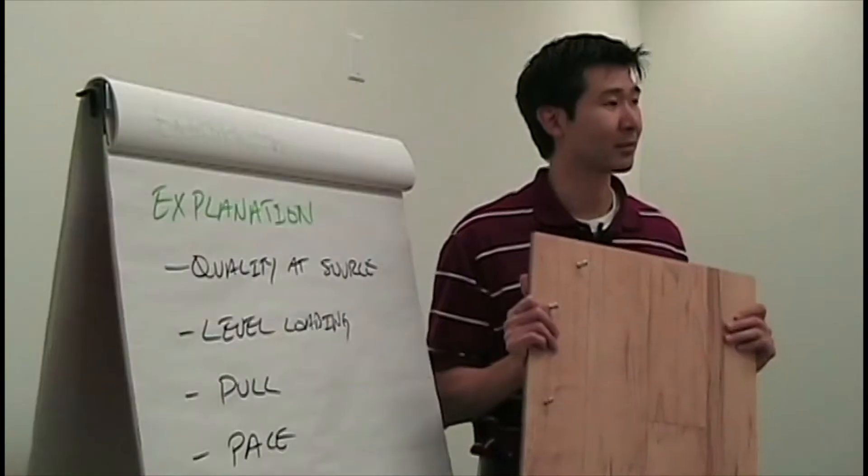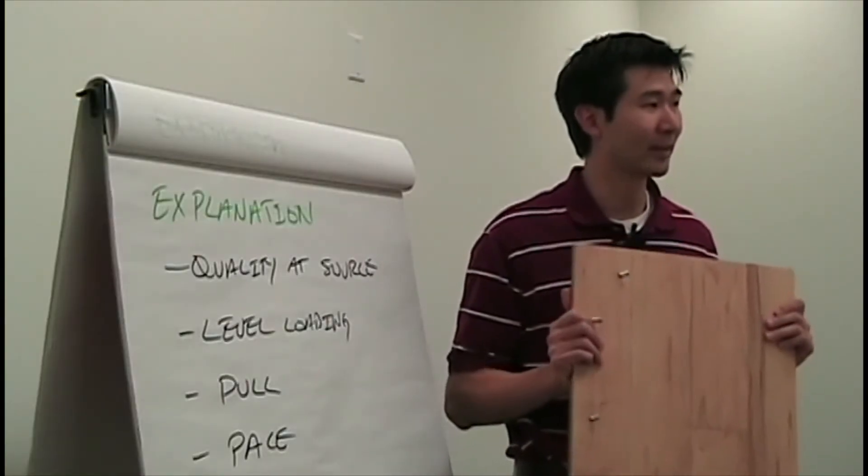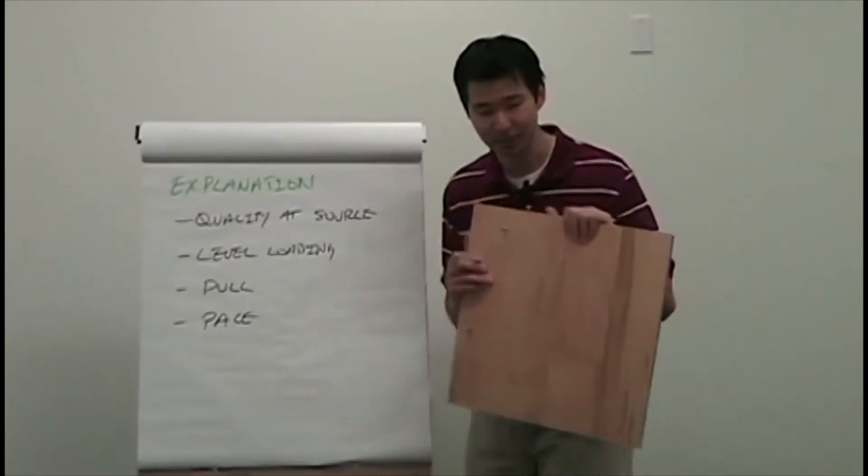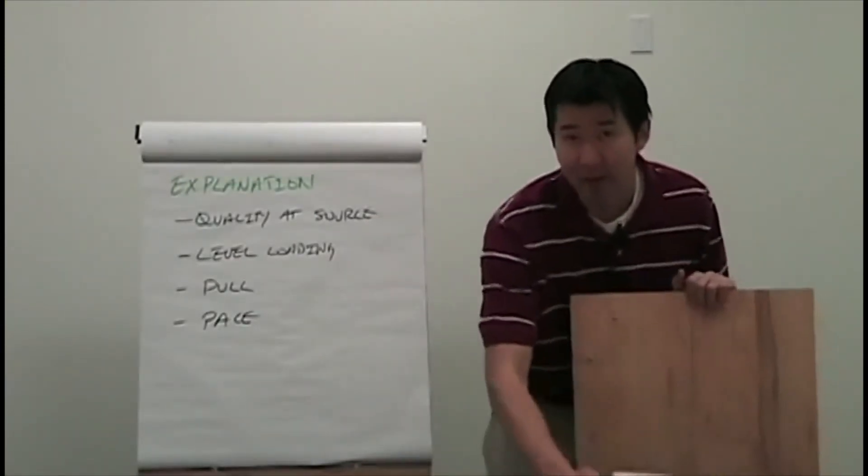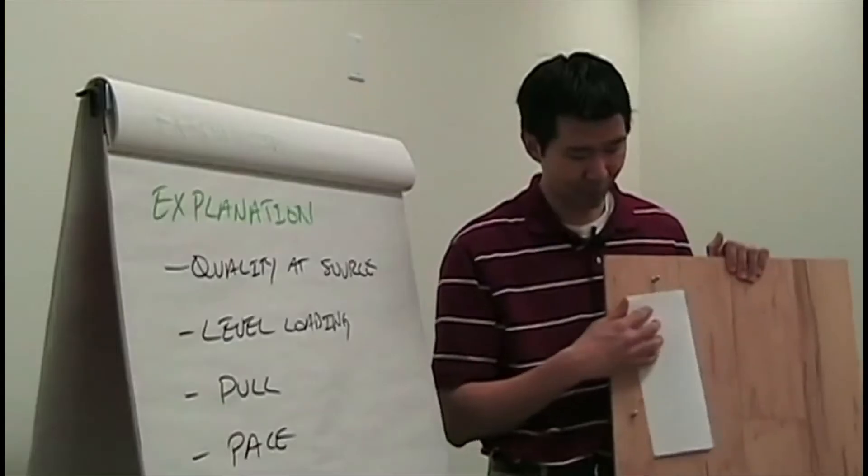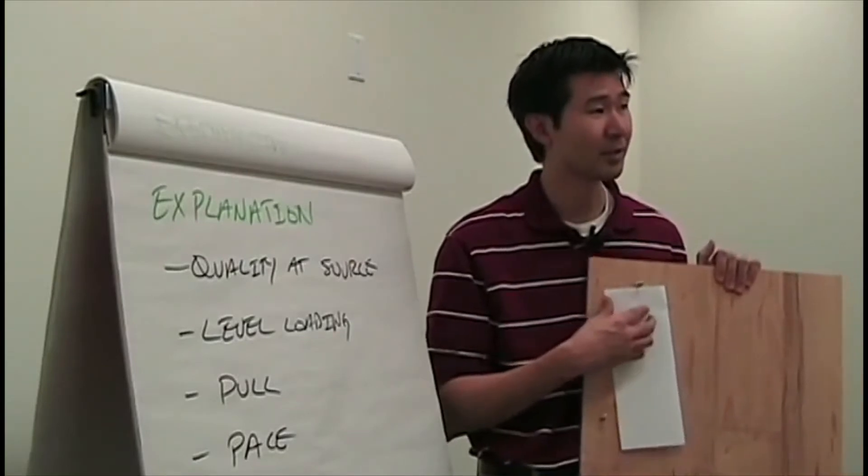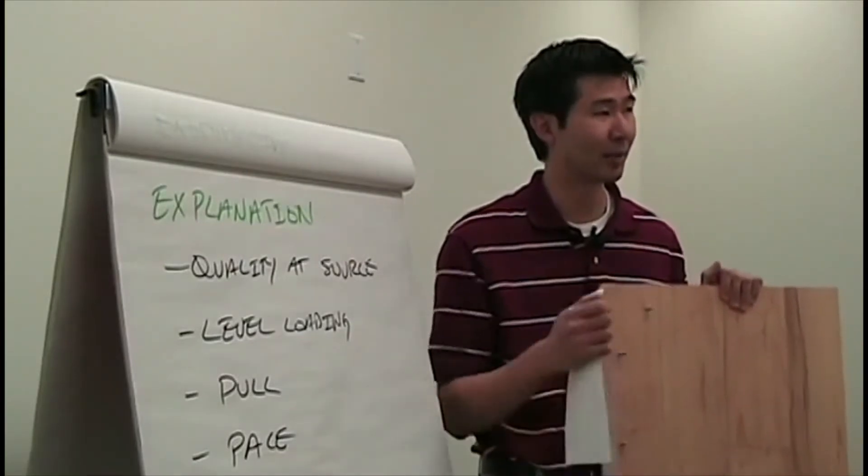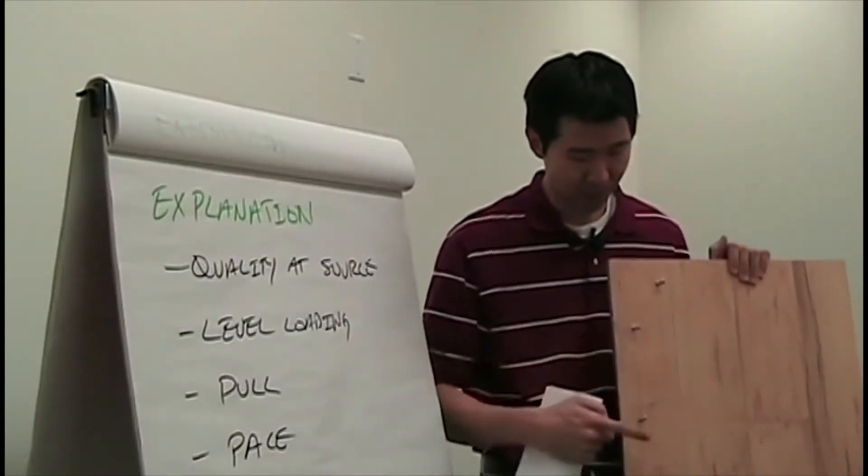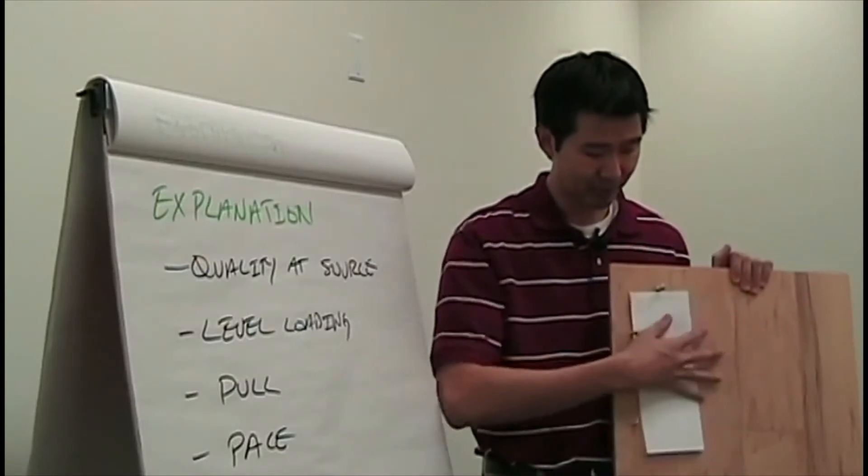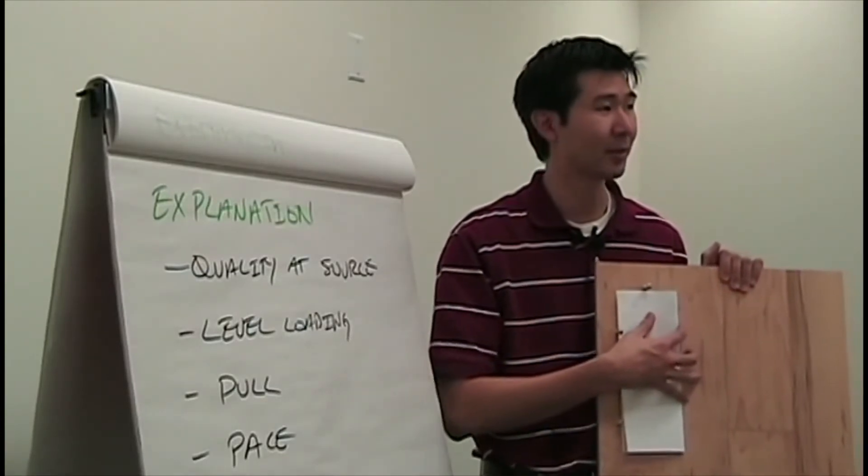This is what I mean by quality at the source. You can't inspect quality in, it has to be built into the process. So this little jig here makes sure that every first fold is correct because we noticed that the majority of the defects were happening earlier in the process. Just with these three nails, if you lay the piece of paper on here, you know every single time you're getting a perfect fold.